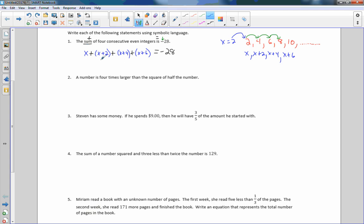Now if I clean this up a little bit and get rid of those parentheses, I have x plus x plus 2 plus x, because with addition signs we don't need the parentheses. This would be x plus x plus 2 plus x plus 4 plus x plus 6 equals negative 28. It does not say to solve. All it said was express using symbolic language. So there it is.